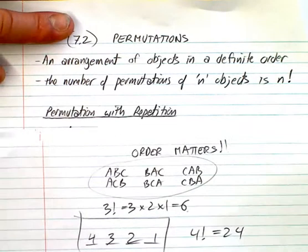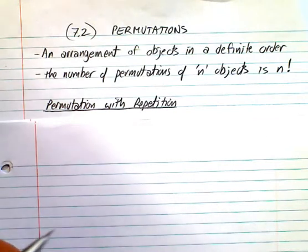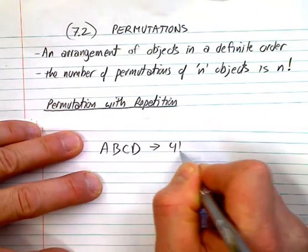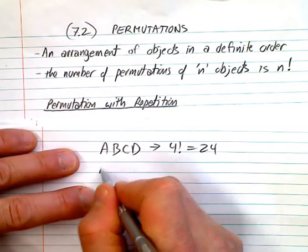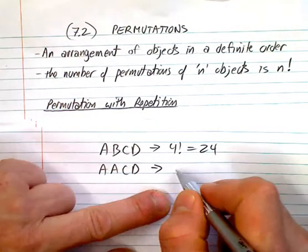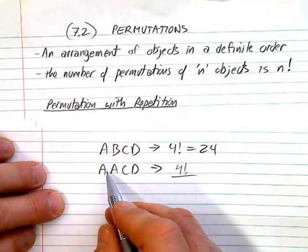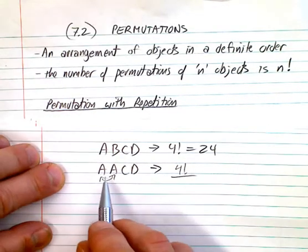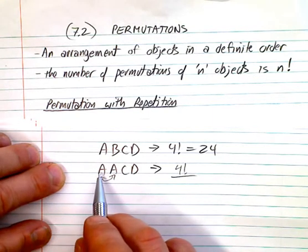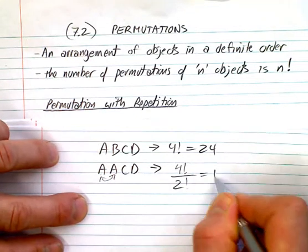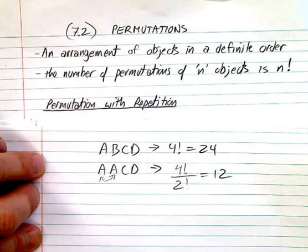Now we're going to look at repetitions. If I had a, b, c, d — that would be 4 factorial, giving me 24 possibilities. But what if I had a, a, c, d? There are still four objects, so it's still 4 factorial, but two of them are the same. So 'a, c, d' and 'a, c, d' will look the same — we'd be double-counting. So we divide by 2 factorial, which gives us 12 possible arrangements.